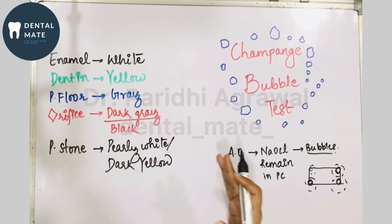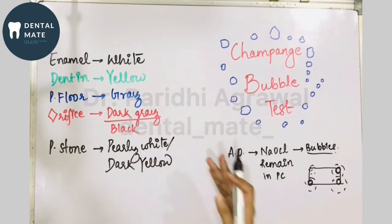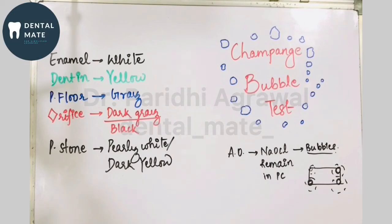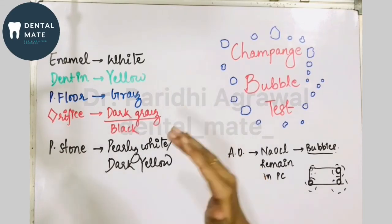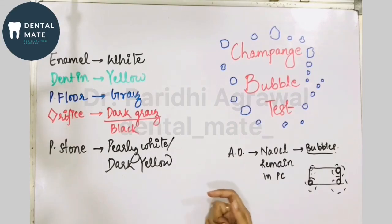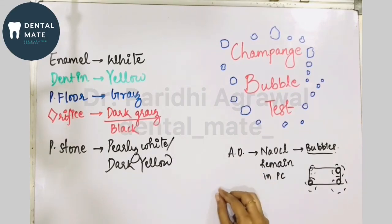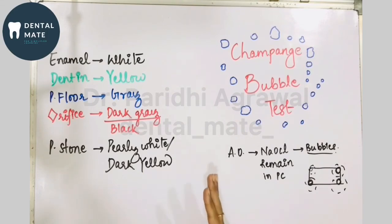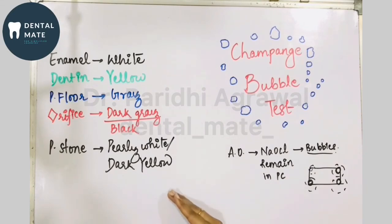So what is usually seen is: enamel is white in color, dentine has a yellowish hue, the pulp floor would be gray in color, and the orifices would appear dark gray or black. The pulp stones would appear dark yellow or pearly white in color. This is the clinical guide to color change.